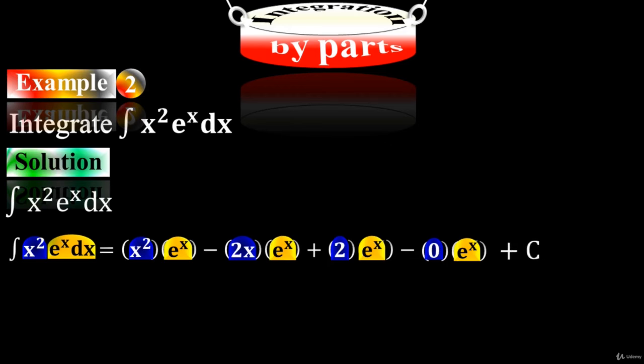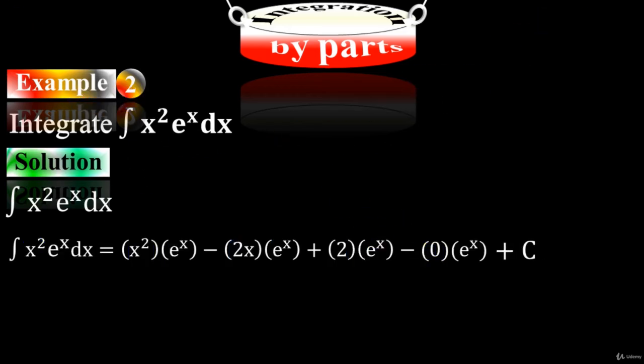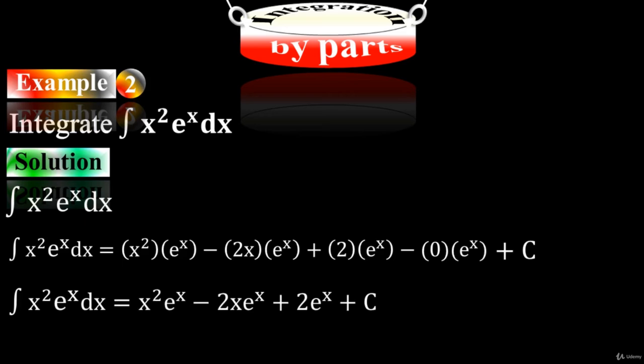Plus the arbitrary constant. So we have x squared times e to the x minus 2x times e to the x plus 2e to the x plus c.